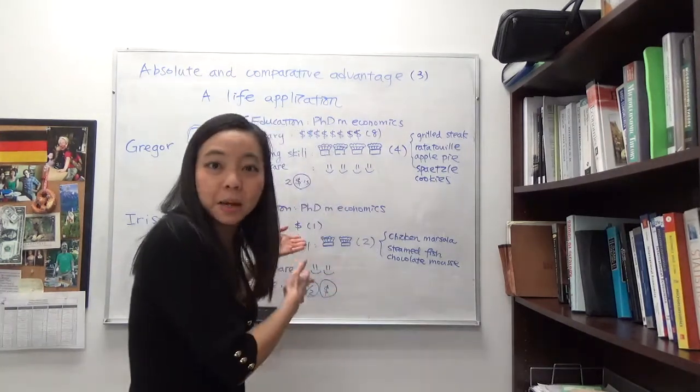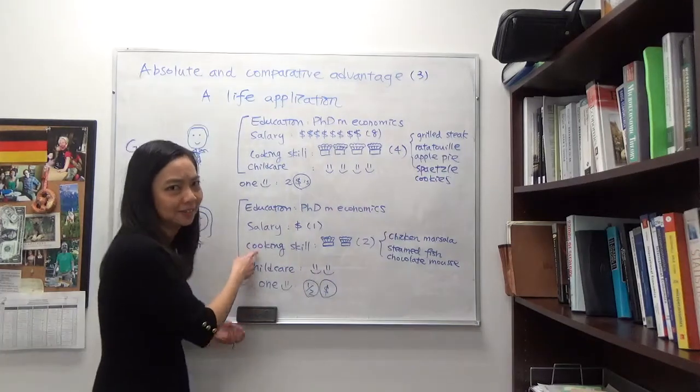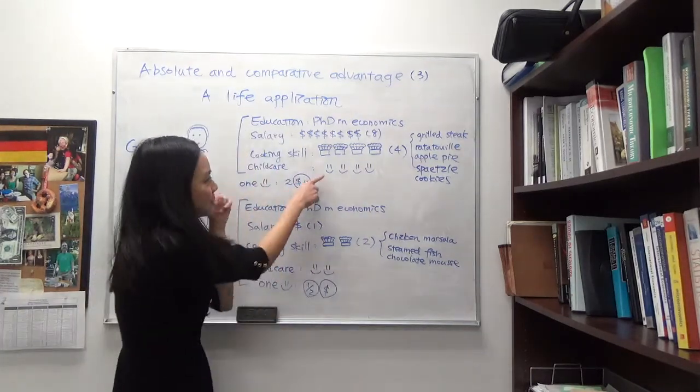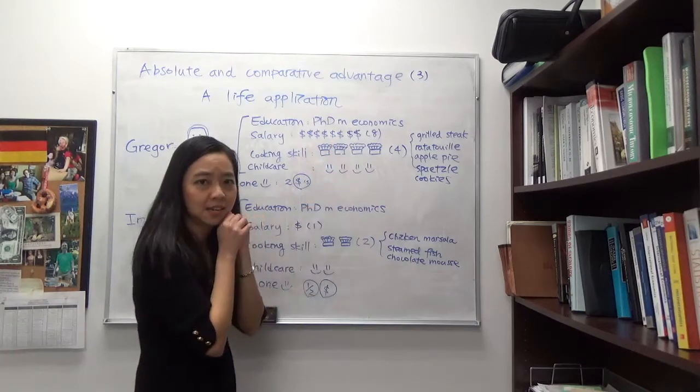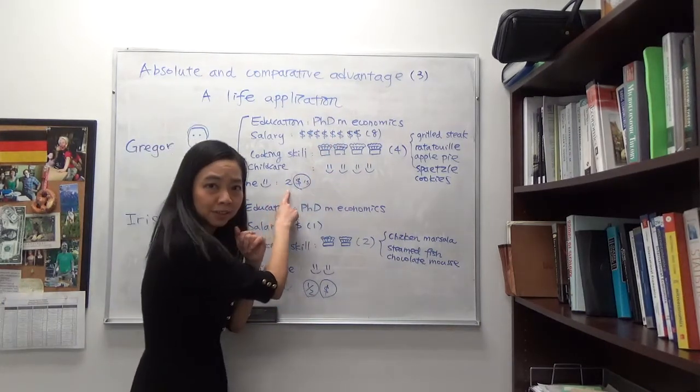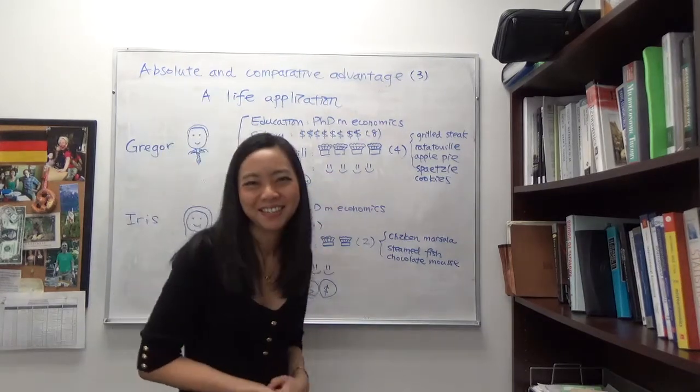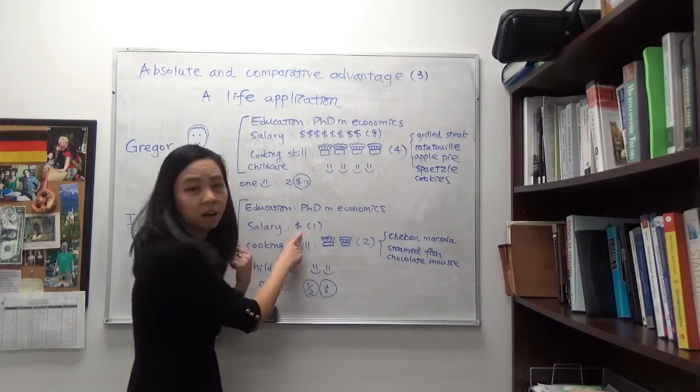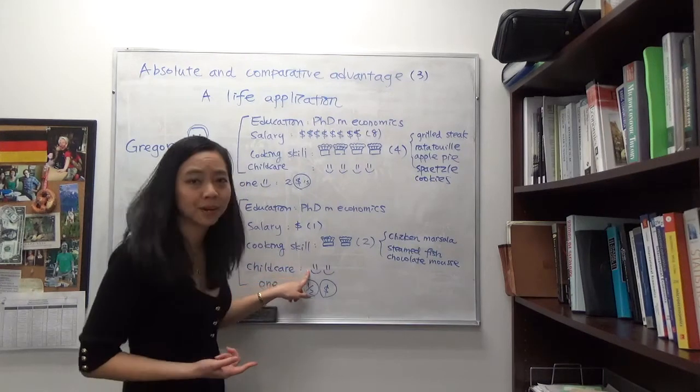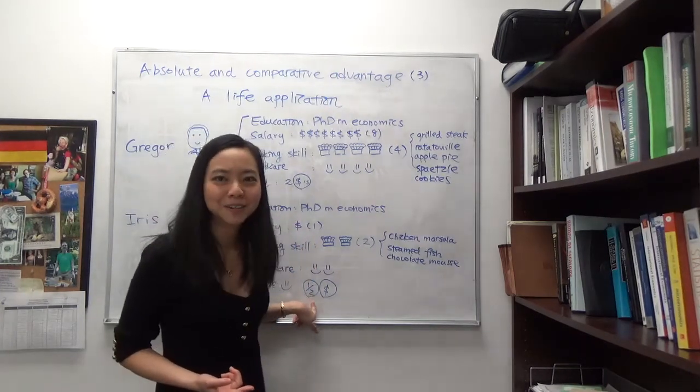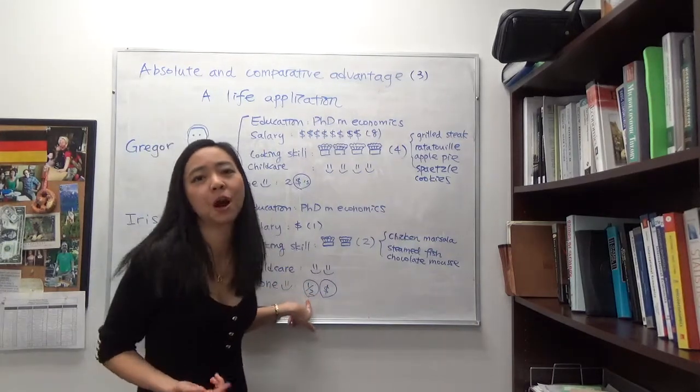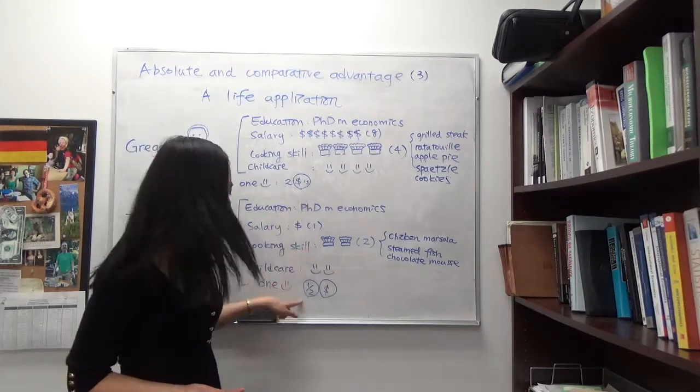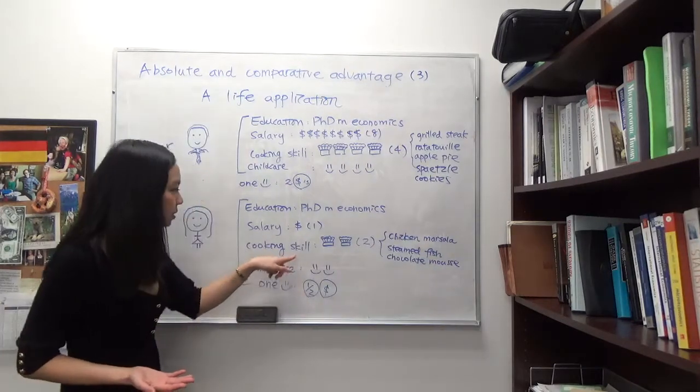If Gregor wants to take care of the children to produce one smiley face, how many dollar signs does he have to sacrifice? He will have to sacrifice two dollar signs in order to provide one smiley face in childcare. How about Iris? She has two smiley faces and only one dollar sign, and therefore to produce one smiley face, she only has to sacrifice a half of a dollar sign. So Iris has a lower opportunity cost when she provides childcare compared to Gregor. Iris has a comparative advantage in childcare.